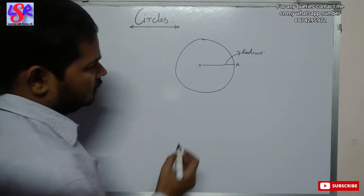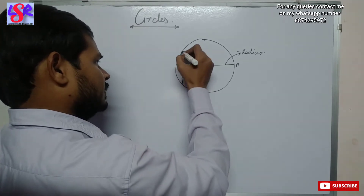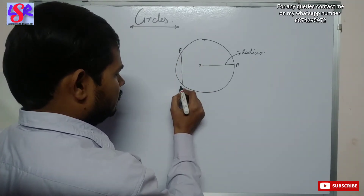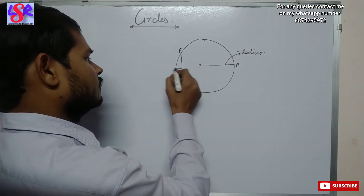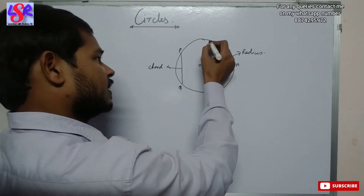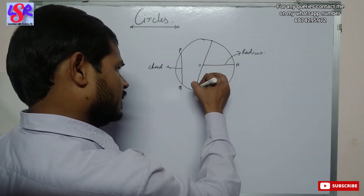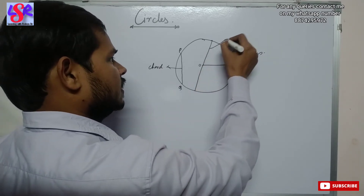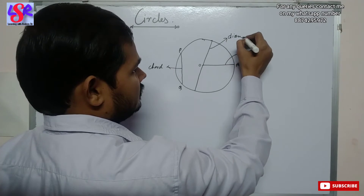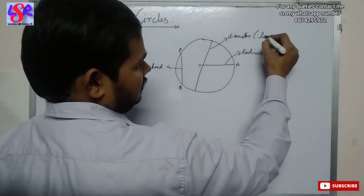If we join any two points on the circle — suppose this one will be P and this one will be Q — then this is known as a chord of the circle. And if the chord is passing through the center, then this chord is known as the diameter of the circle. We can also say the diameter is the longest chord of the circle.